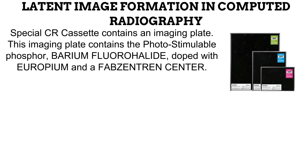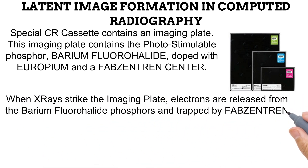By photostimulable, we mean it gets stimulated to release electrons when X-ray photons strike it. The imaging plate also has impurities of europium added to it in a process known as doping. Thirdly, an area known as a phabzentrant center is present on the plate. It is these three parts of the imaging plate that are responsible for the formation of the latent and subsequently the visible image in computed radiography. When X-rays strike the imaging plate, electrons are released from the barium fluoroholite because they are photostimulable. These released electrons are trapped by the phabzentrant centers, and the trapped electrons in multiple phabzentrant centers represent the latent image.